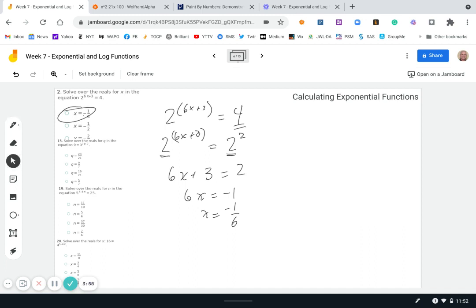Okay, let's look at the next one. We're going to solve this one: 9 equals 3 to the 7q minus 7. Again, let's take our 9 and put it as a power of 3. So we know that 9 is 3 squared, that equals 3 to the 7q minus 7.